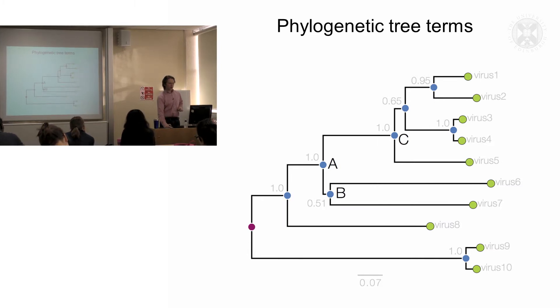What are the ancestral states for these viruses? These are called nodes in the tree. So these are internal nodes. Sometimes the tips and the leaves are also called external nodes. But I prefer to leave the term nodes to describe those which are internal to the tree.